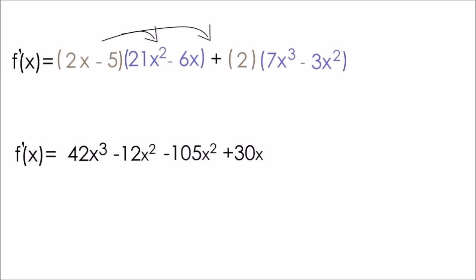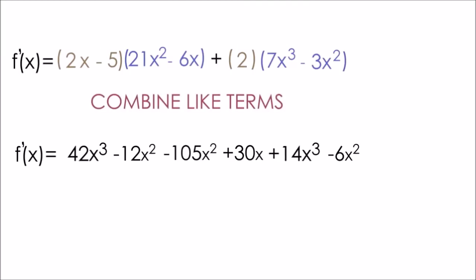And if we keep moving to the right, we can multiply the 2 with the 7x cubed minus 3x squared. 2 times 7x cubed is equal to 14x cubed. 2 times negative 3x squared is equal to negative 6x squared. All right, so now at this point, let's combine our like terms.